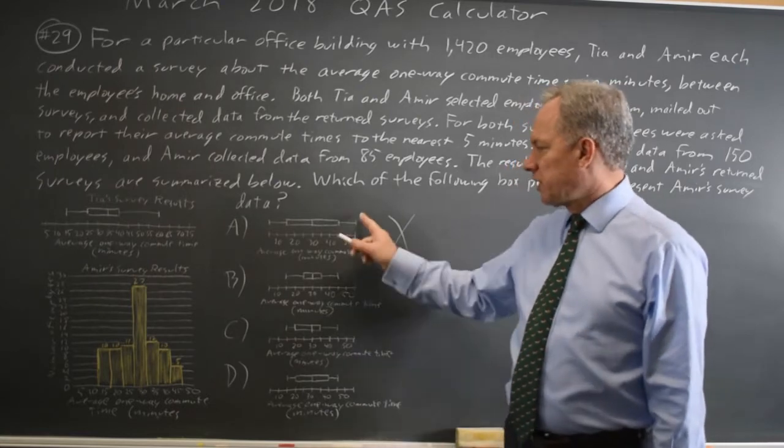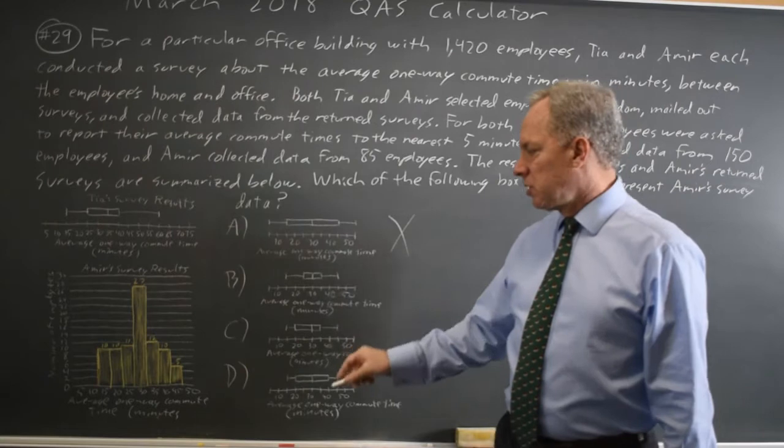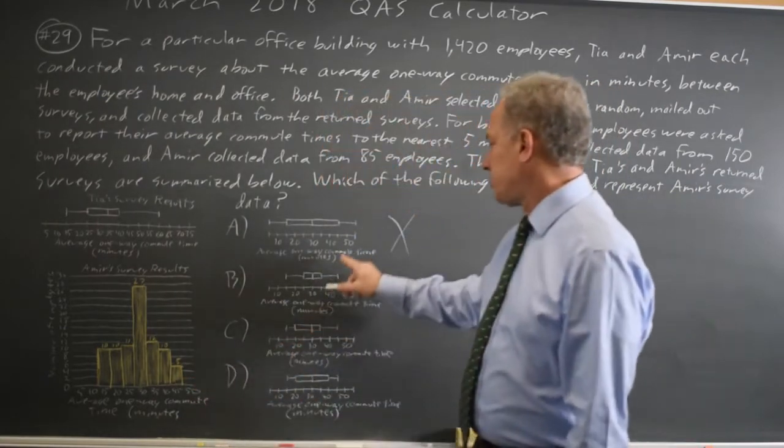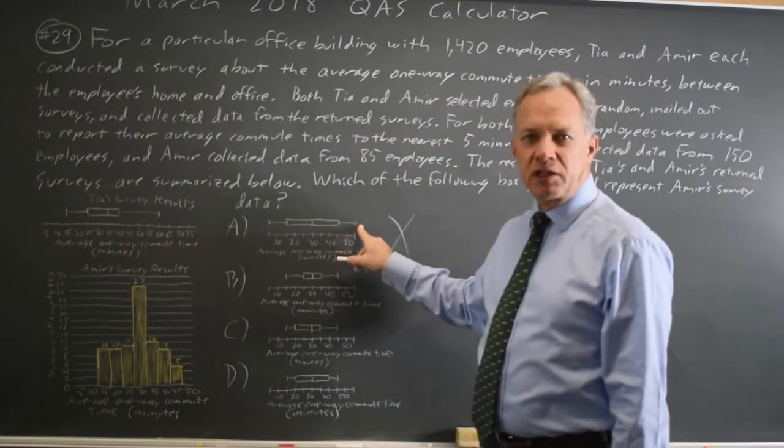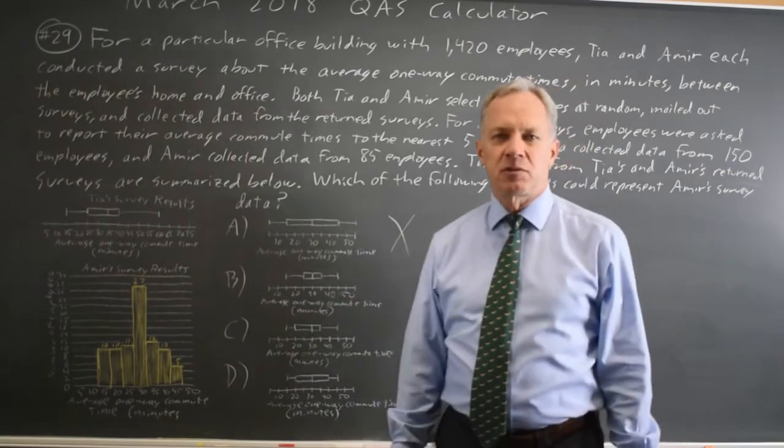Similarly, the vertical line at the end of the upper thin line is the maximum. Amir's maximum was 45. This shows 55, which is incorrect for A, but B, C, and D all show a maximum of 45.